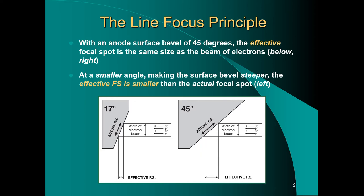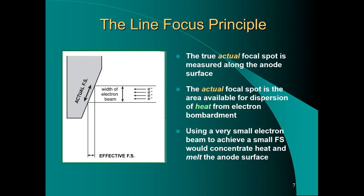The actual focal spot is measured along the anode surface. The actual focal spot is the area for dispersion of heat from electron bombardment. A wider actual focal spot is better for heat dissipation.